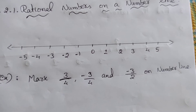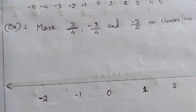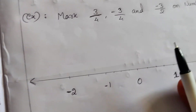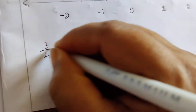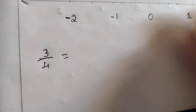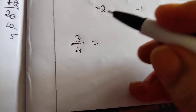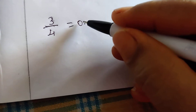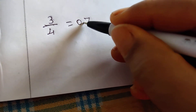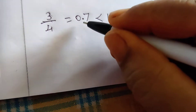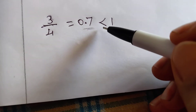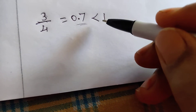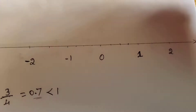If you want to mark these, I'll show you the number. Now we know the value of 3 by 4. The value of 3 by 4 — if you want to write the two integers, the value is less than 1. It's not a decimal place. The value between 0 and 1, that is 3 by 4.